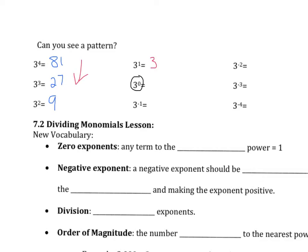We are going to remember that anything to the 0 power is 1. Now we have a negative exponent. What happens when we have a negative exponent? Well, we take the reciprocal — which is going to be 1 over 3 — and we make the exponent positive. 1 over 3 to the 1st gives us 1 third.